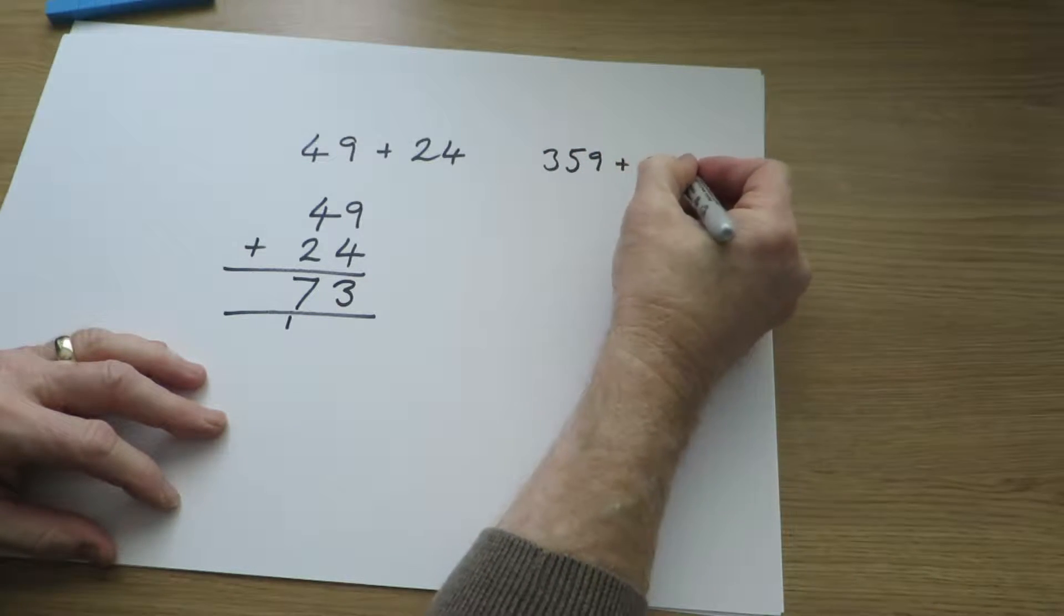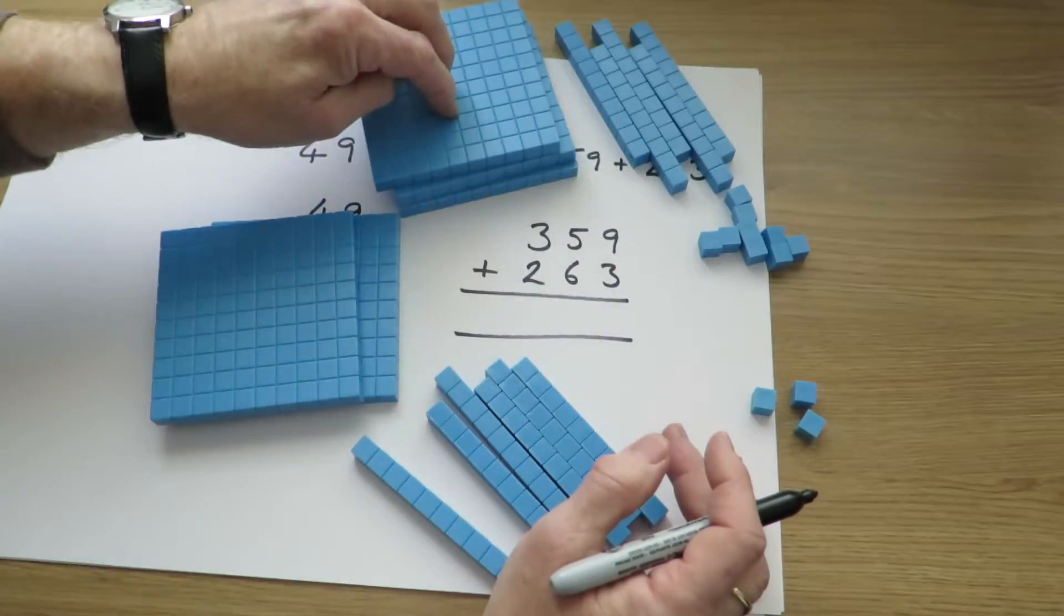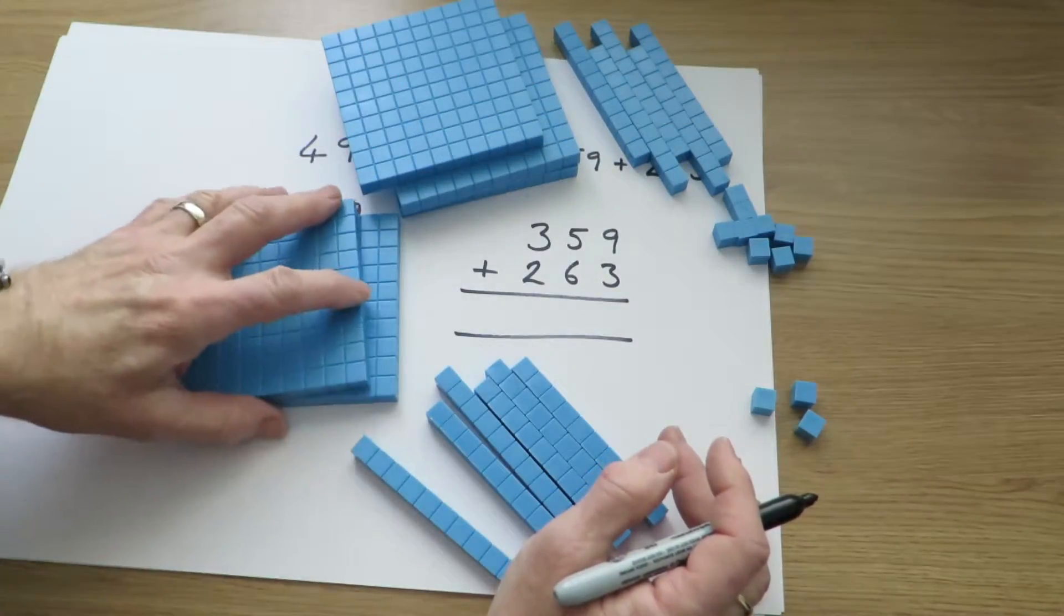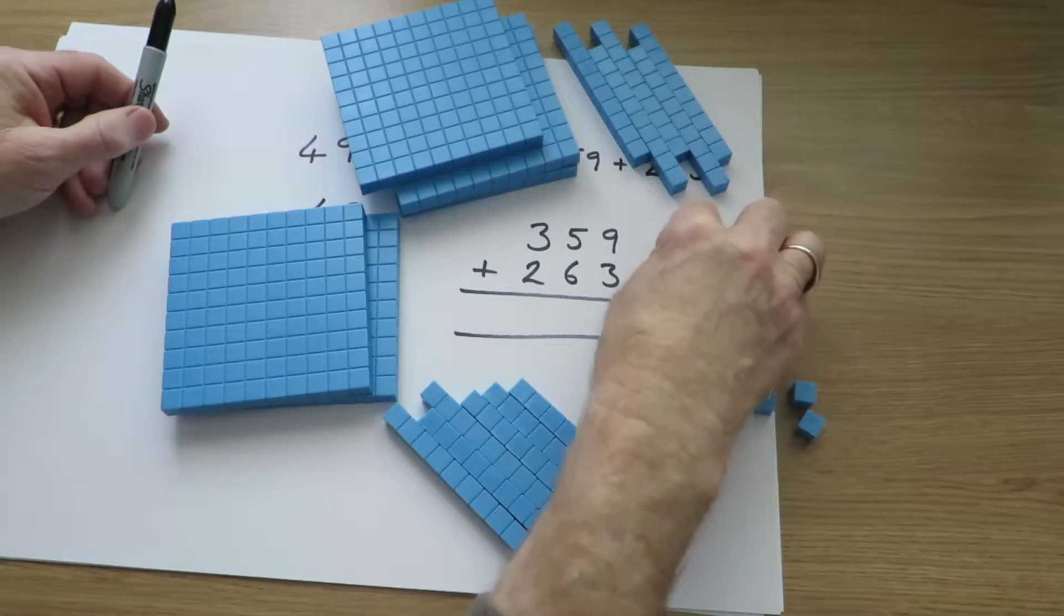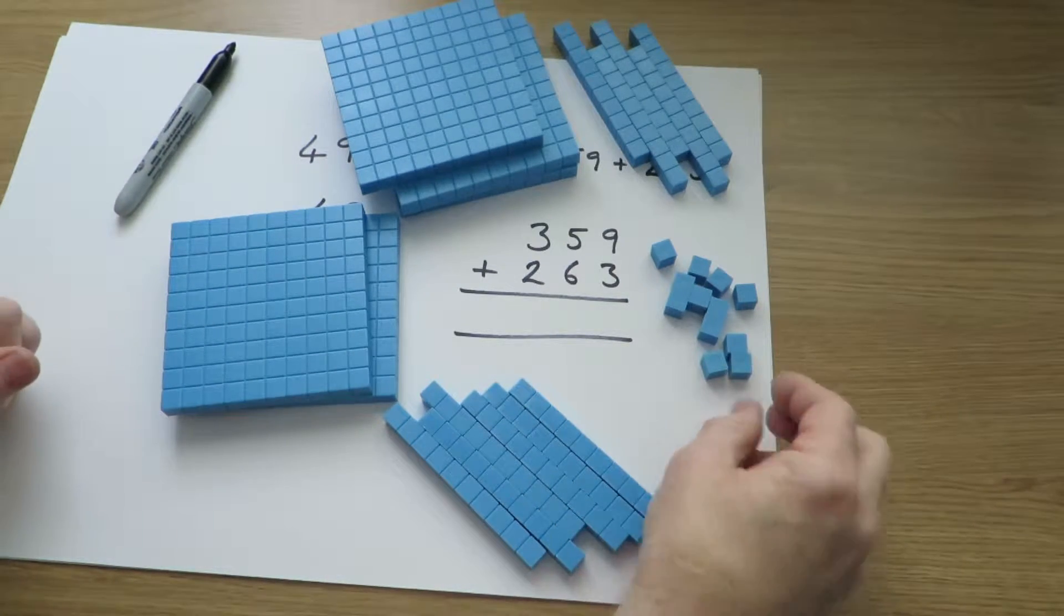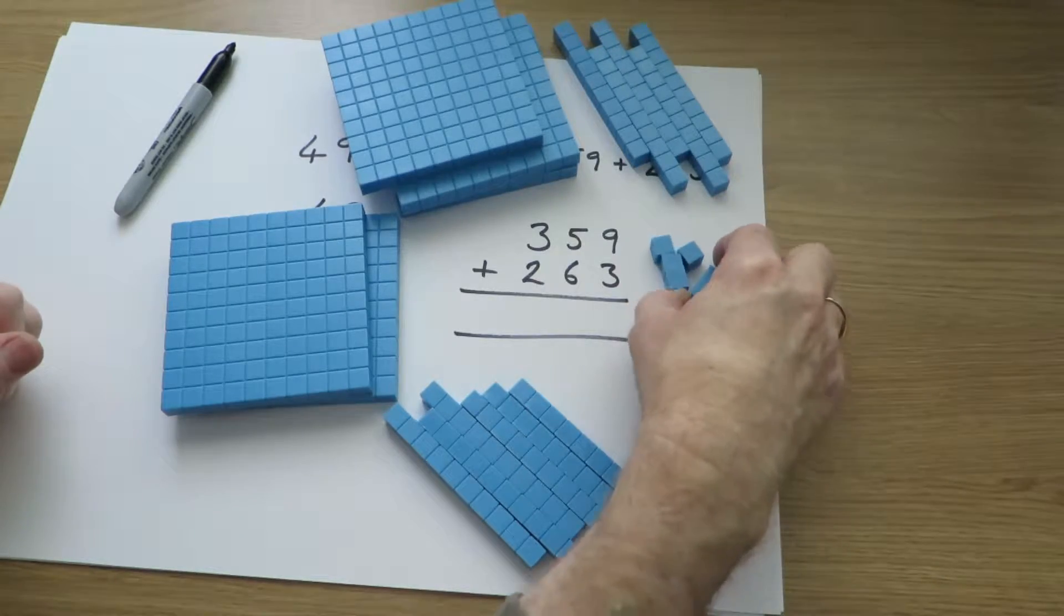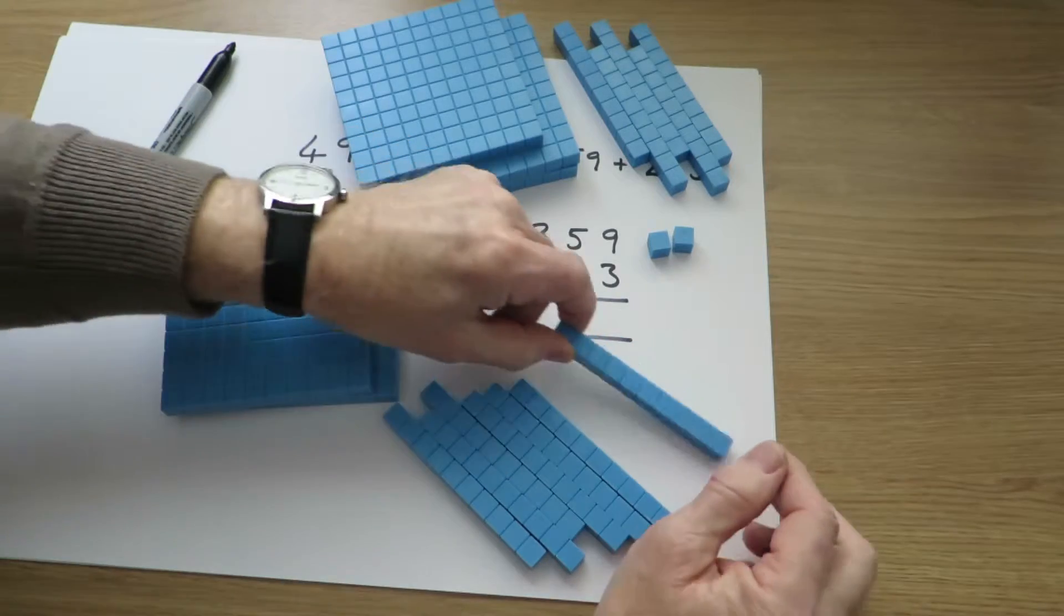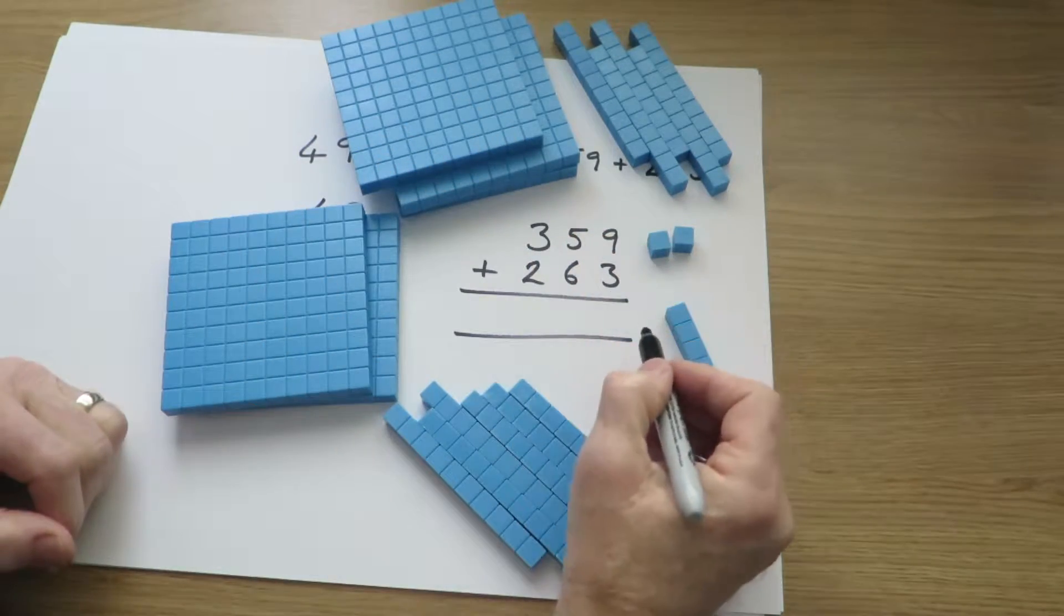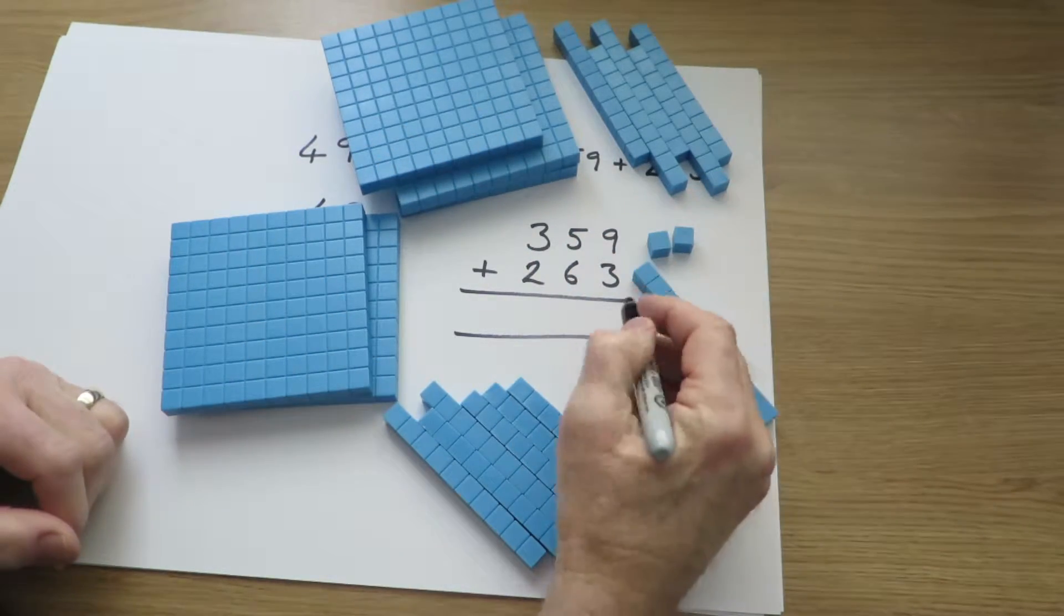359 plus 263. 359, 263. So we start with the units, 9 units and 3 units. It gives us 12 units, but we know that 10 of those can be swapped for an extra 10. So 9 units add 3 units gives us a 10 and 2, it gives us 12.